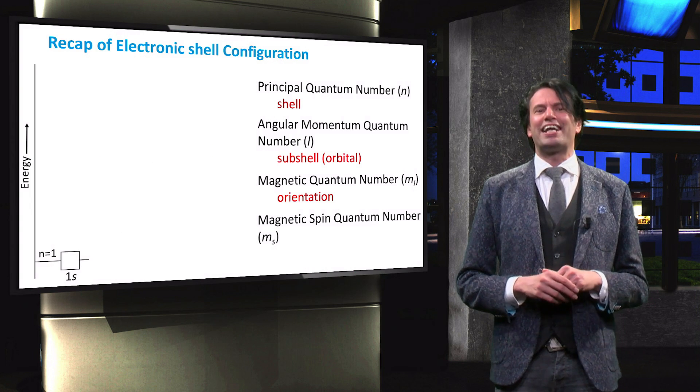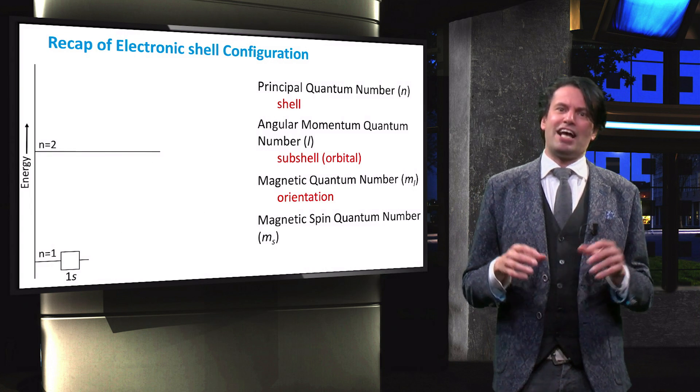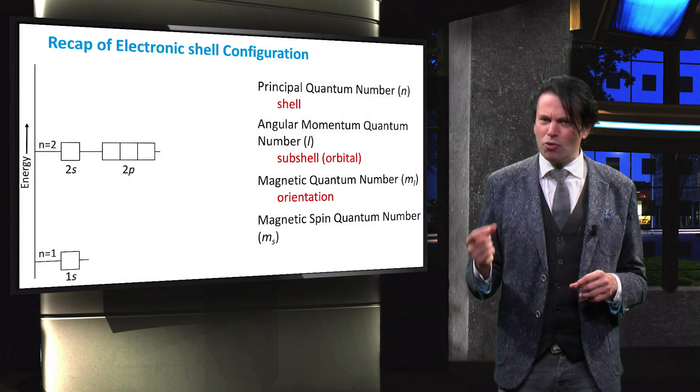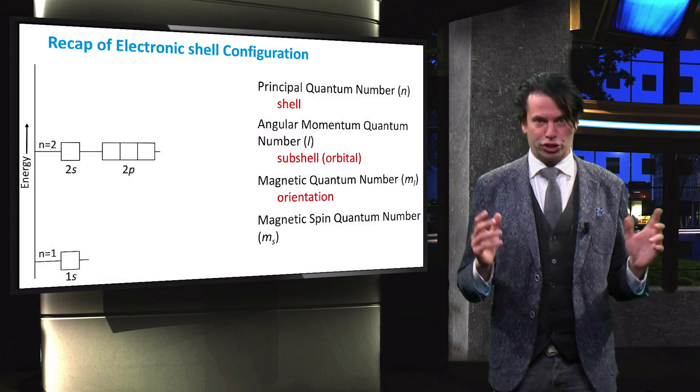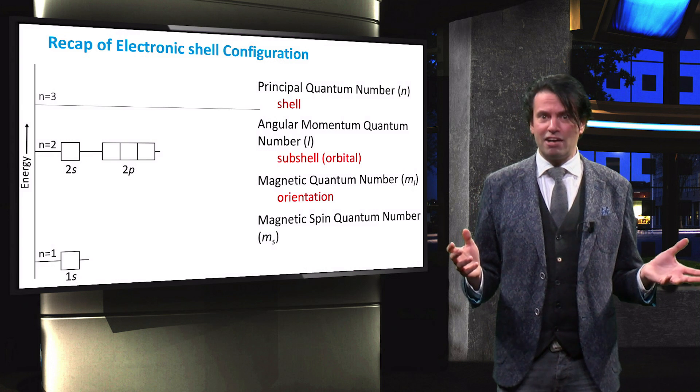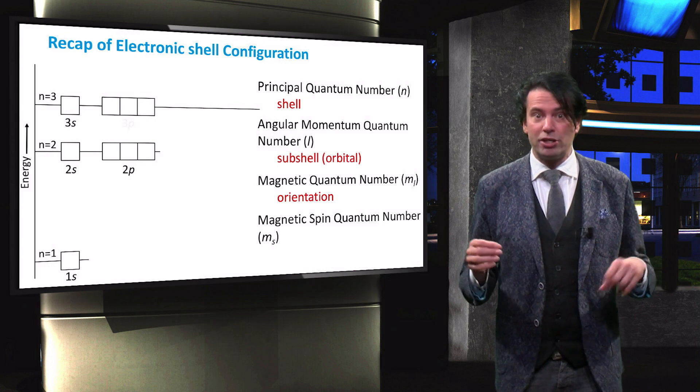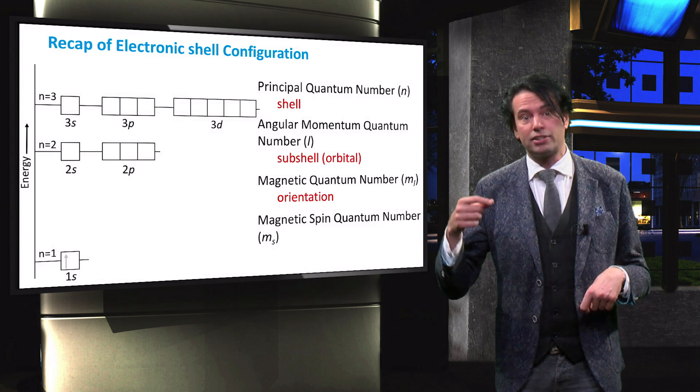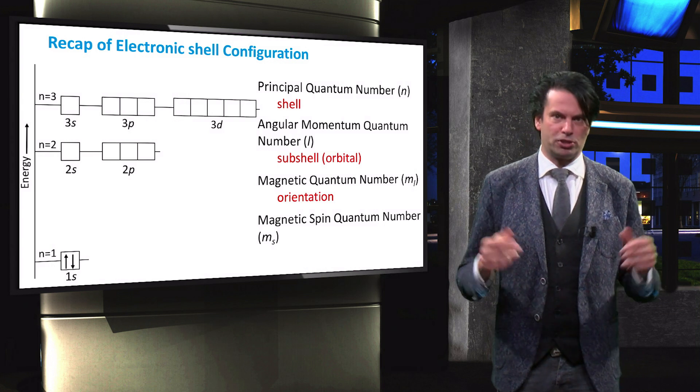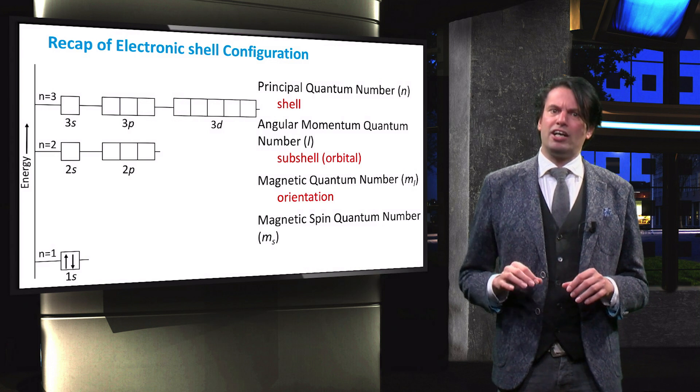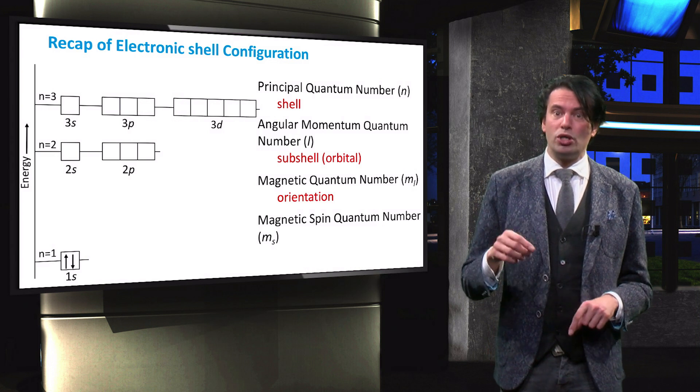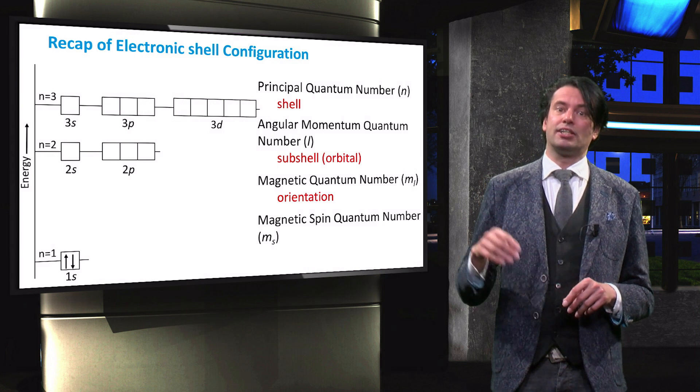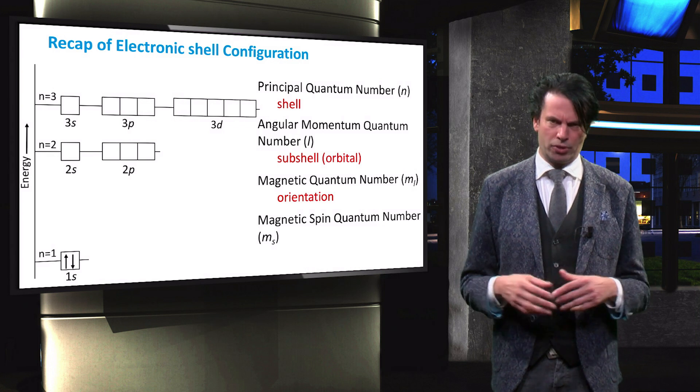From these rules we can gather that the first energy level has only one sub-shell with one orbital. This is known as the 1s sub-shell. The second energy level has two sub-shells, namely 2s and 2p, while the third energy level has 3s, 3p and the 3d sub-shells. In every shell, the s sub-shell has only one orbital, p has 3 orbitals with different orientations and d has 5 orbitals with different orientations.